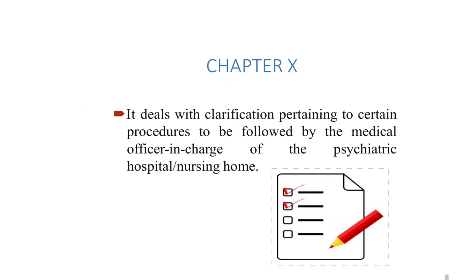Chapter 10 deals with clarifications pertaining to certain procedures to be followed by the medical officer in charge of a psychiatric hospital or nursing home. It covers duties of the medical officer, including procedures for situations such as when a psychiatric patient has died and no one is there to collect the body. It also addresses how to admit, how to discharge, legal implications, untoward incidents, and other protocols that must be followed by the medical officer in charge.